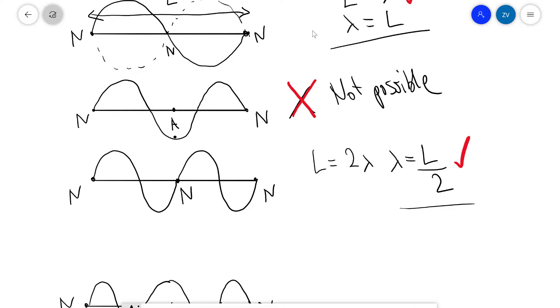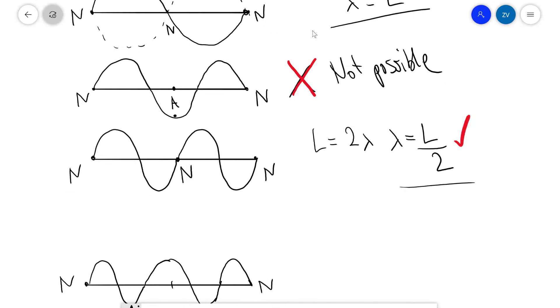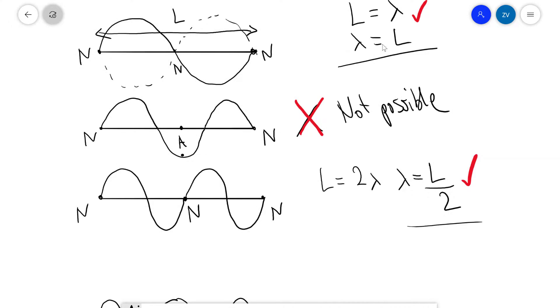In fact, this pattern will be continuing. We know once again that lambda equals L is possible. Shall we just take the equation to rearrange for lambda? We know that lambda equals L over 2 is also possible.